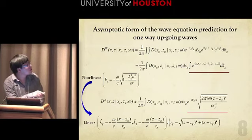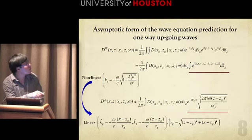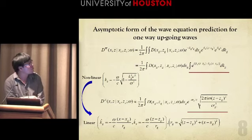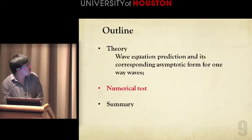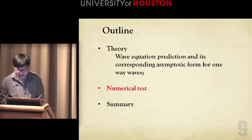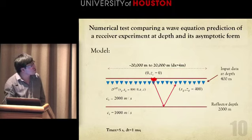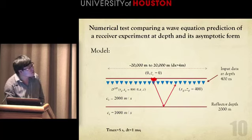In the numerical test, we will compare these results with the exact Cagniard-de Hoop method solution. So this is the numerical test. This picture shows the model, which is one reflector, and the reflector depth is equal to 2,000 meters.